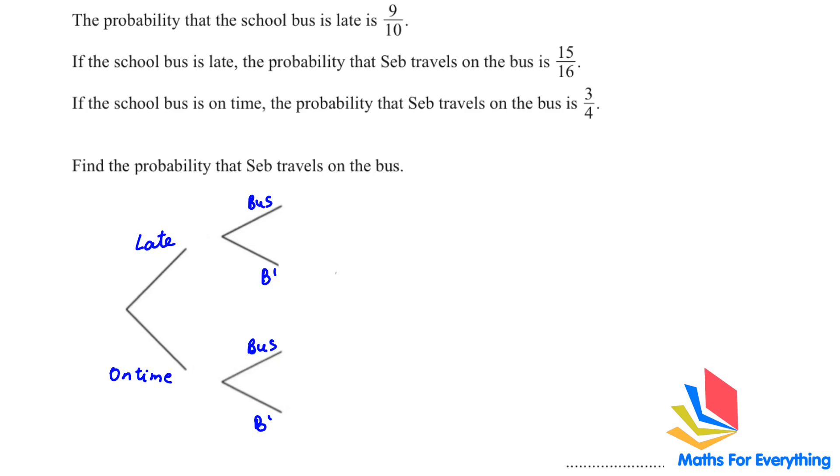We'll make a tree diagram. The probability that the school bus is late is 9 over 10. So, late is 9 over 10. On time will be, remember that when you have these branches, when you add them up, it should equal to 1. To find on time, you have to subtract 1 minus 9 over 10. And that will give you 1 over 10.